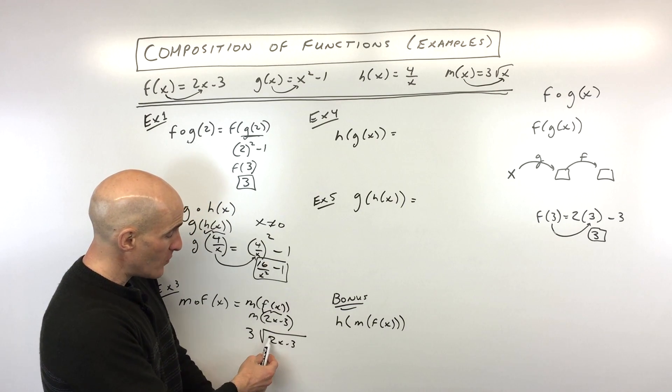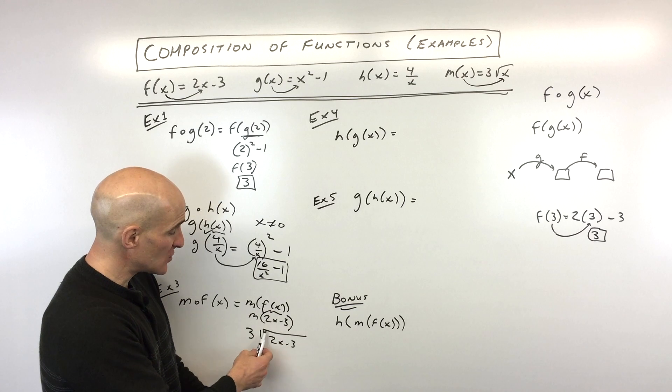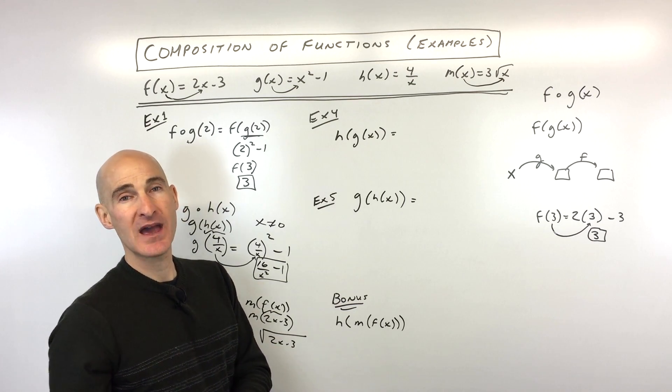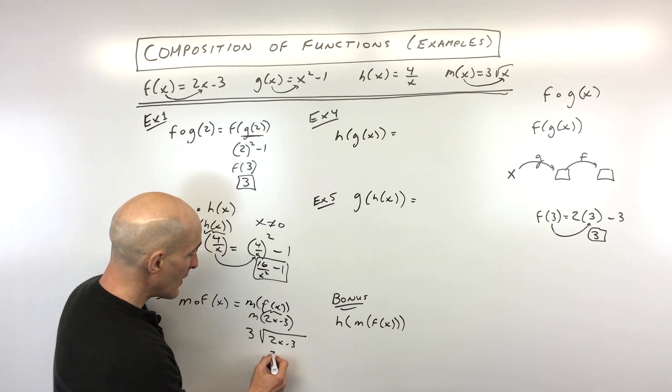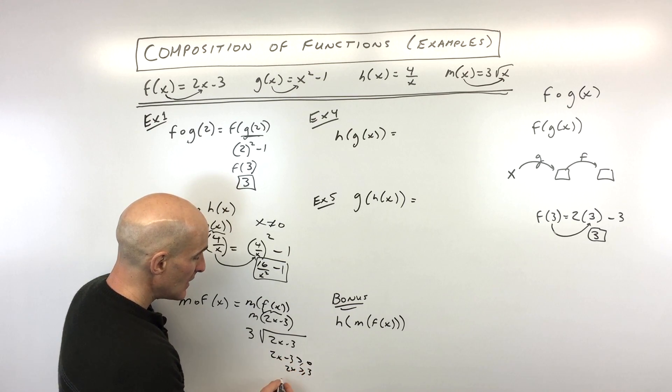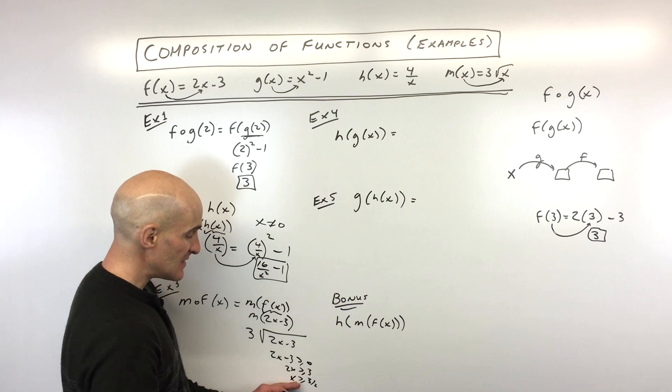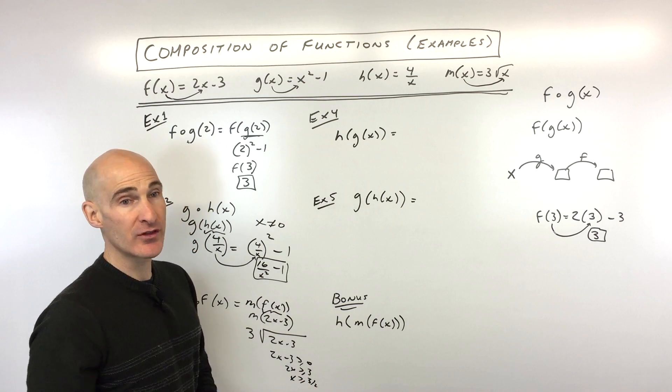But if you want to analyze the domain, you can see that we can't take the square root of negative numbers, that would give us imaginary numbers. So whatever's underneath this square root has to be greater than or equal to zero. Let's just solve this inequality here, divide both sides by two. And you can see that x has to be greater than or equal to three halves.